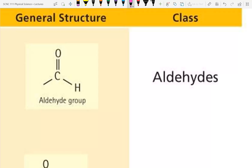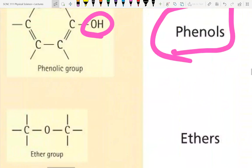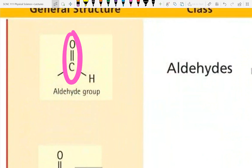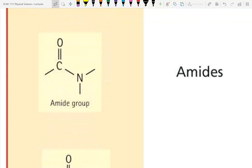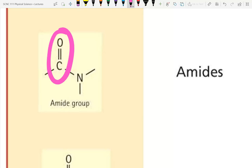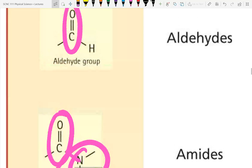Aldehydes — like formaldehyde — have a carbon double-bonded to an oxygen, just like ketones. The difference is that the aldehyde's double-bonded carbon is at the end of the chain, whereas a ketone's is in the middle. Amides combine an amine group with a ketone/aldehyde structure: a carbon double-bonded to oxygen, with that carbon also bonded to a nitrogen (amine group).